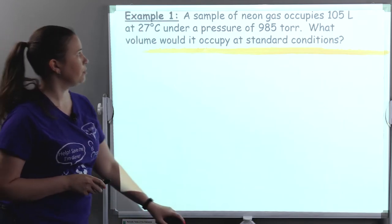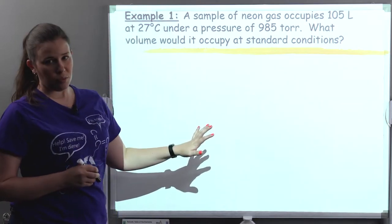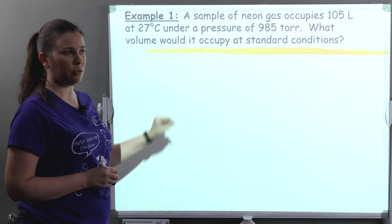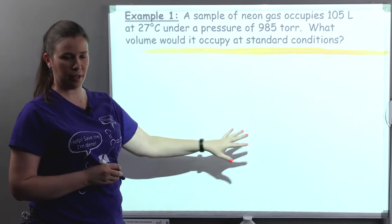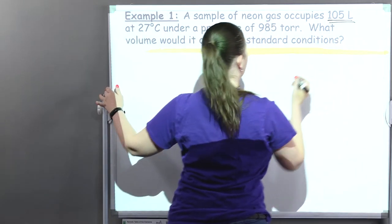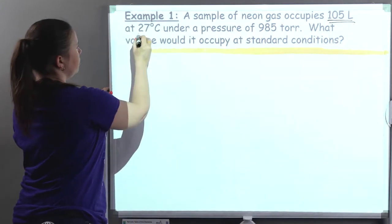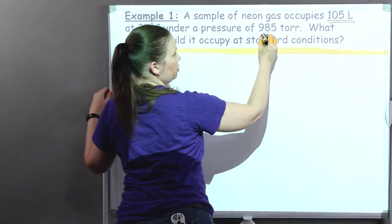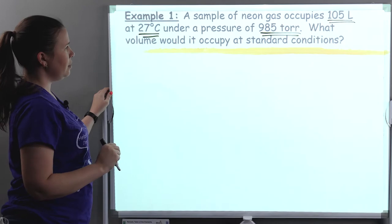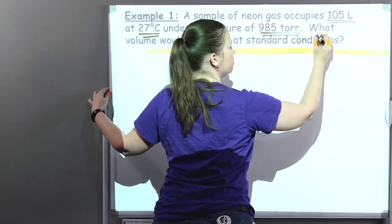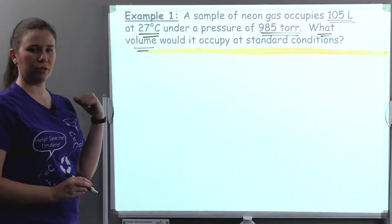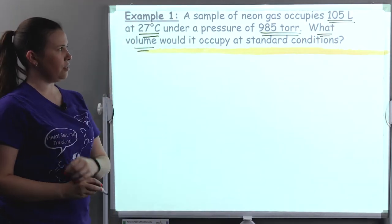So let's look at a question. I'm going to approach this the same way: look through the question for variables, make a list, write down the formula, plug and play. I've got a sample of neon gas that occupies 105 liters at 27 degrees Celsius, pressure 985 torr. Then it says what volume — so I found my unknown. Whenever you see 'what,' that tells you what you're looking for.